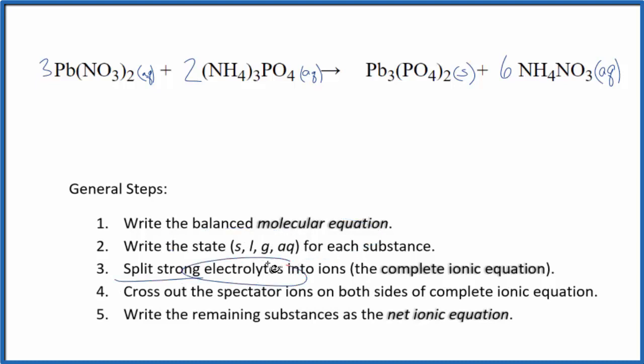Now we can split the strong electrolytes into their ions. This will give us the complete ionic equation. We don't know the charge on lead. It's a transition metal. But we do know the whole nitrate here is 1-. Good one to remember. Since we have two of them, the lead has to be 2+. So, this is lead 2.